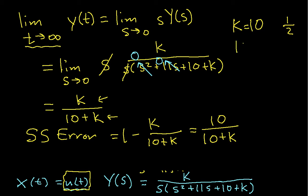If I use a value of K equal to 30, then my steady state error will be 1 fourth.